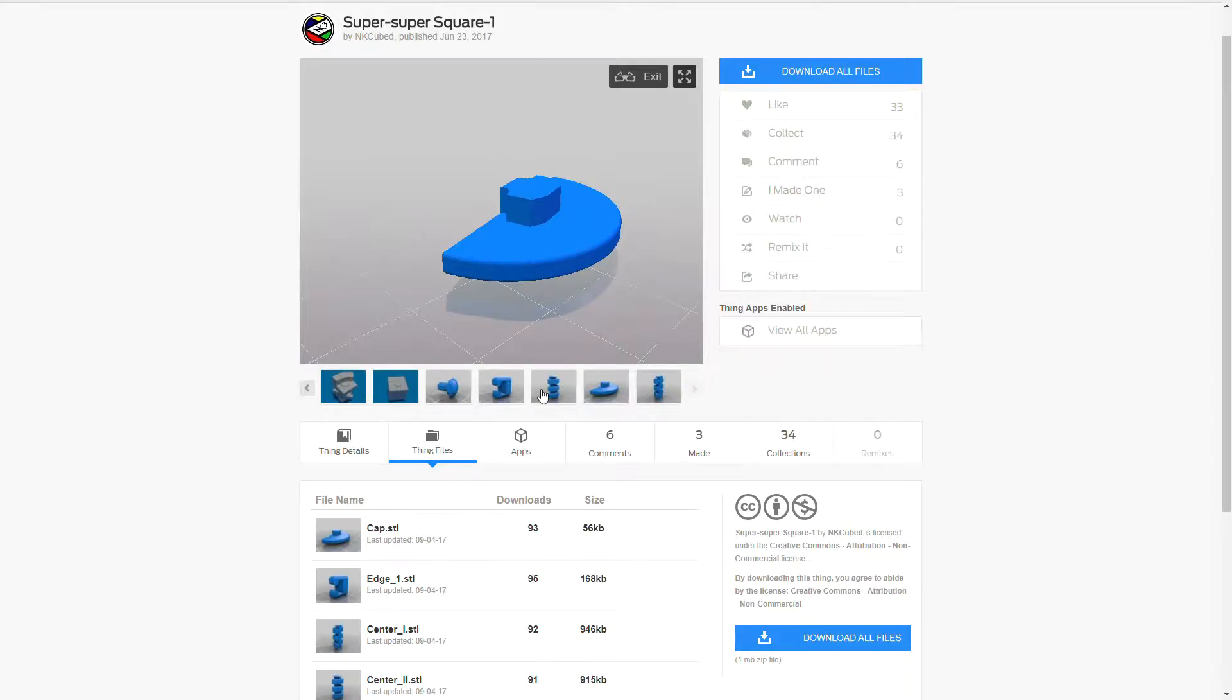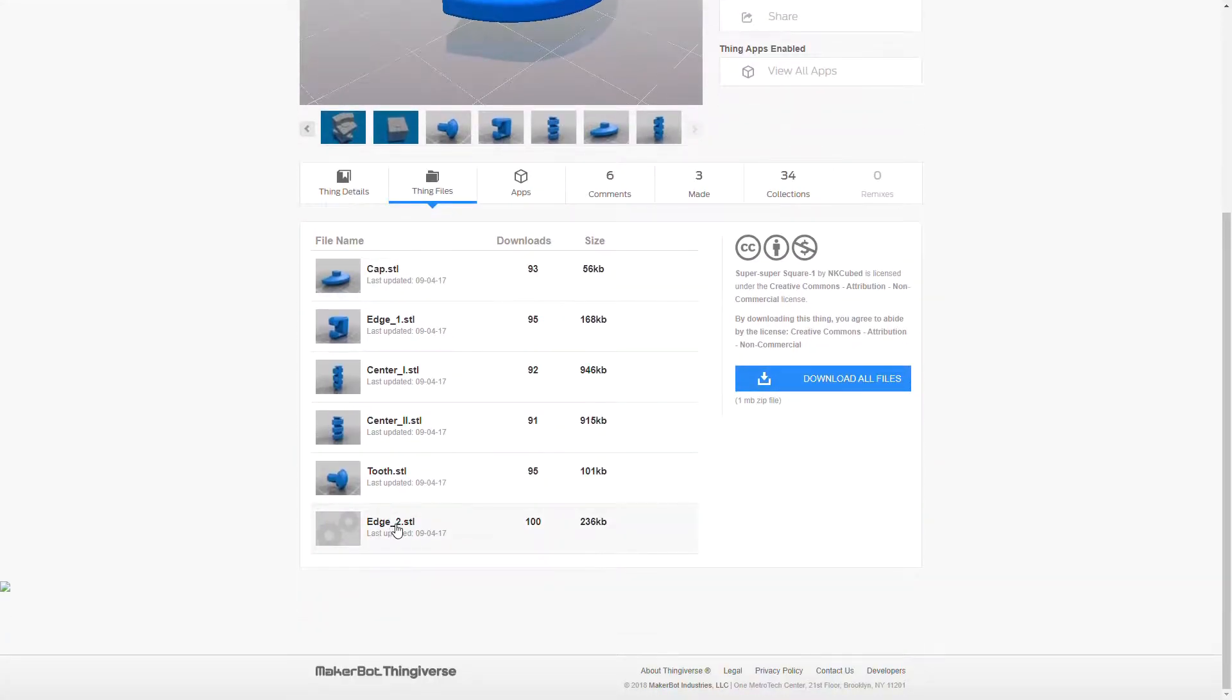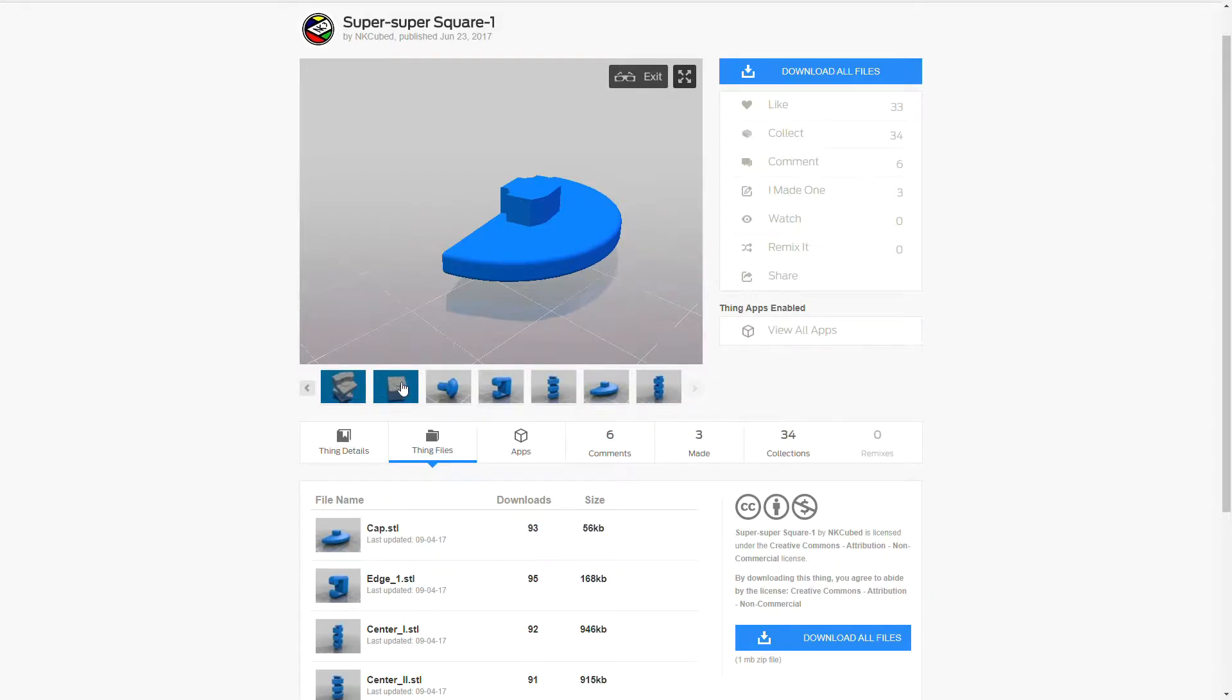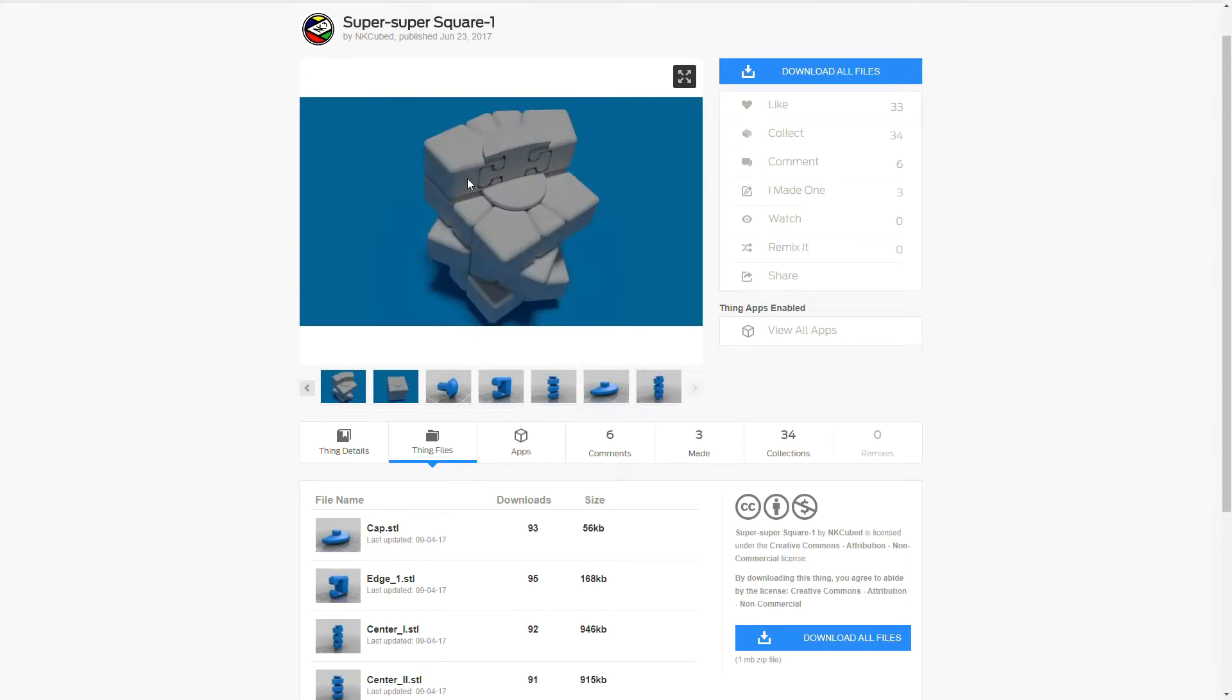And finally you need to print one of these corners that are under edge2.stl but don't exactly show up on the renderings. But basically just print it with this face here down. So basically again you see the nubs on the bottom and then the printer just goes up and prints. And that way you don't need any overhangs or supports.